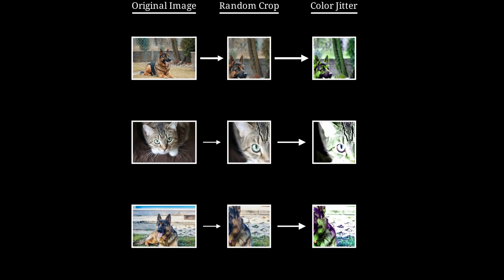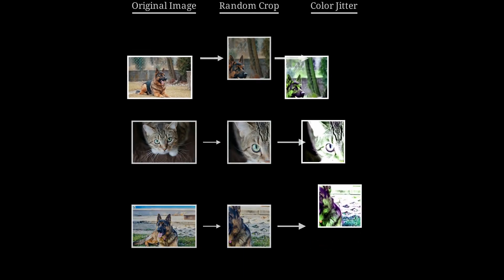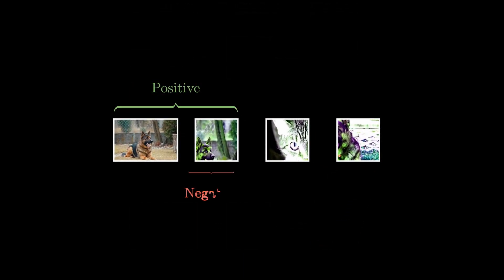This process is repeated for all other images in the batch, creating one positive pair and many negative pairs for each anchor image. Because negatives are sampled from within the batch, SimCLR requires very large batch sizes.